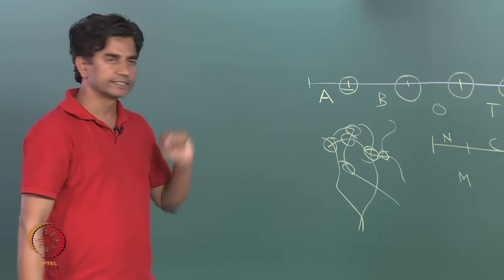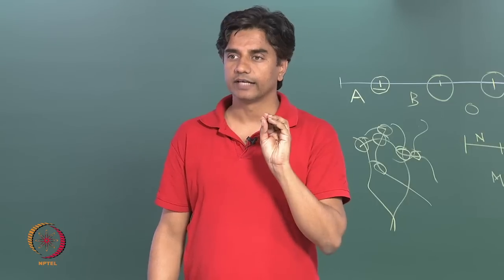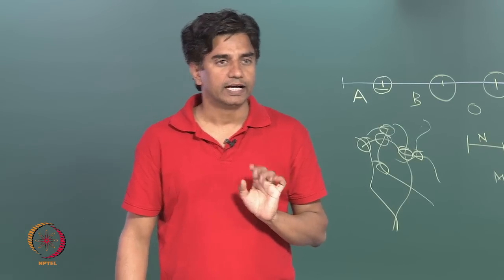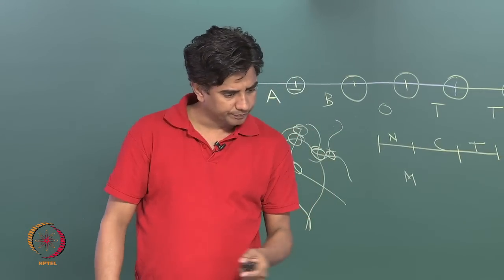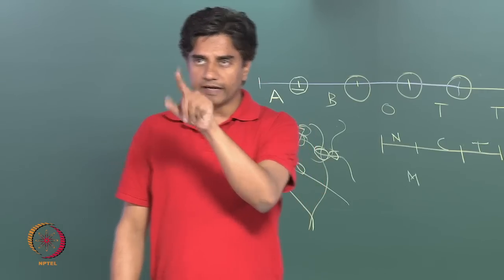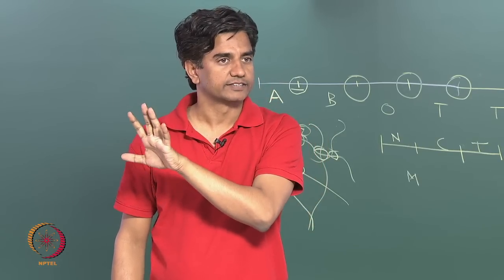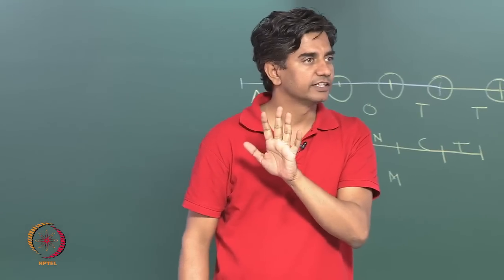All these languages come from five different language families of India. The names of these families are: Indo-Aryan, Dravidian, Austro-Asiatic or Munda, Tibeto-Burman, and Andamanese. The Andamanese family of languages is spoken in the Andaman and Nicobar Islands, which is part of us. Similarly, there are other island groups — Lakshadweep — where Malayalam and many others are spoken.